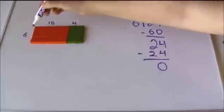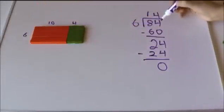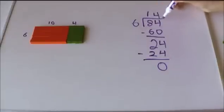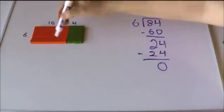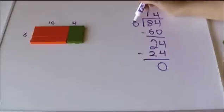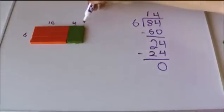So this looks exactly like this. The entire rectangle is 84. One side is 6, right there. Other side is 14. 10 and 4, 14.